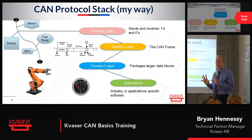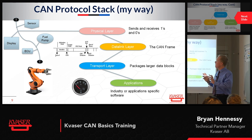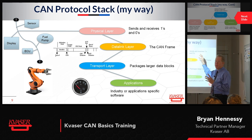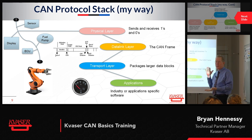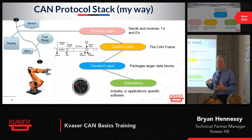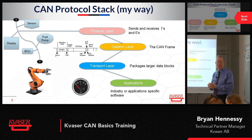The physical layer is just there to get the ones and zeros across. Once you can reliably and consistently get ones and zeros across the network, your physical layer is good. That's the best way to separate and understand the physical layer from all of the other more complicated stuff that works above or below it in the protocol stack.